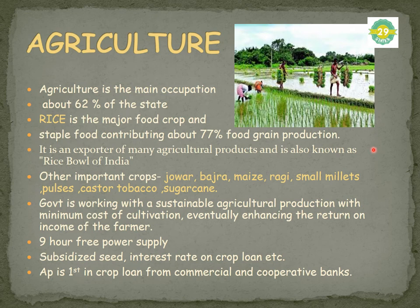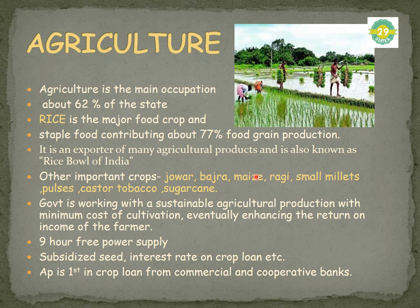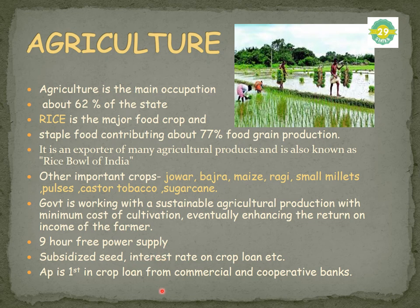Andhra Pradesh is very famous for agriculture. About 62% of the state's population is engaged in agriculture, and about 77% of food grains produced is rice. Andhra is known as the 'Rice Bowl of India.' Other important crops include jowar, bajra, maize, ragi, small millets, pulses, castor, tobacco, and sugarcane. The government provides free power supply, subsidized seeds, interest-rate concessions, and crop loans to develop the agricultural sector. Andhra Pradesh is first in crop loans from commercial and cooperative banks.